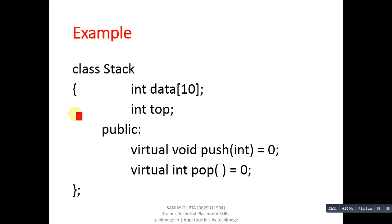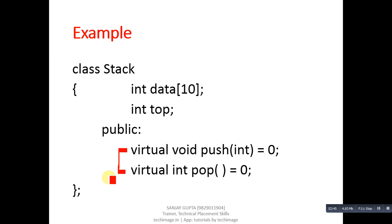This is an example of a pure virtual function. The name of the class is Stack, with two attributes — data and top — and two pure virtual functions: push and pop. This is the base class. The benefit of a pure virtual function is that now you only have to inherit this Stack class and define the definitions of push and pop.